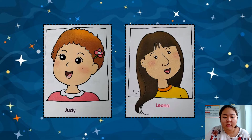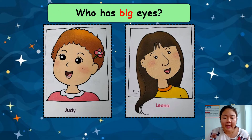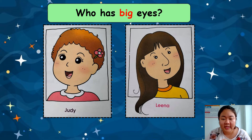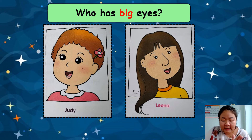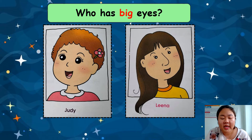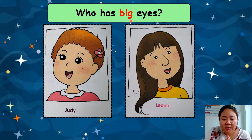Let's try answering from the pictures. Who has big eyes? I give you three seconds. The answer is Judy — ใครมีดวงตาที่ใหญ่ (who has big eyes)? Judy. Look — Judy's eyes are big, but Lena's eyes are small.